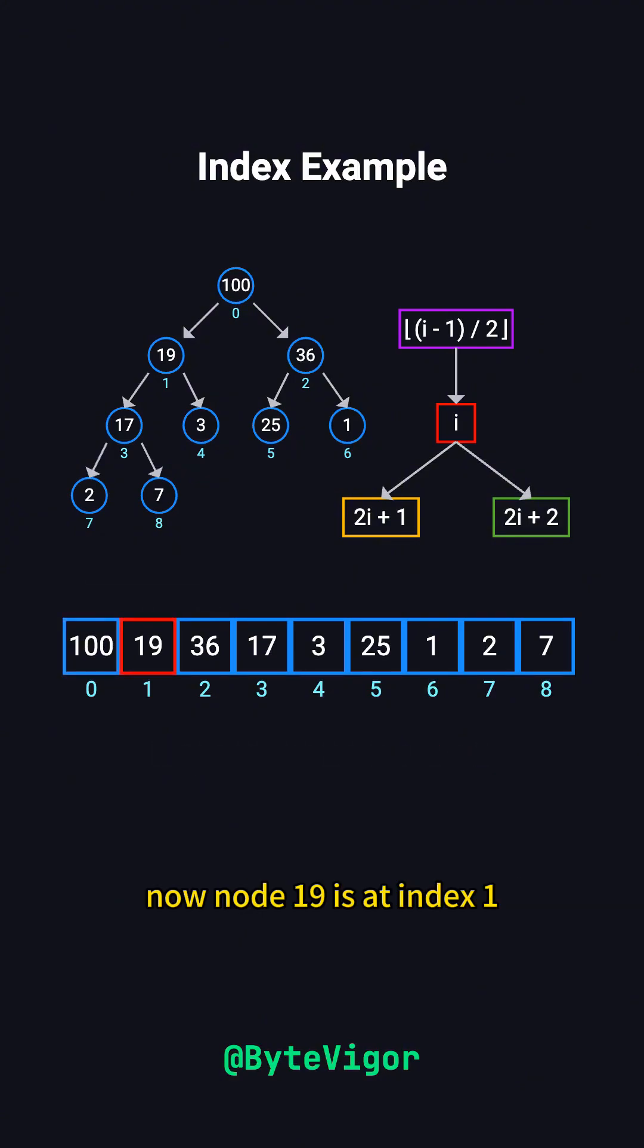Now, node 19 is at index 1. Its left child is at 2 times 1 plus 1, equaling 3, and holds the value 17. Its right child is at 2 times 1 plus 2, equaling 4, and holds the value 3.